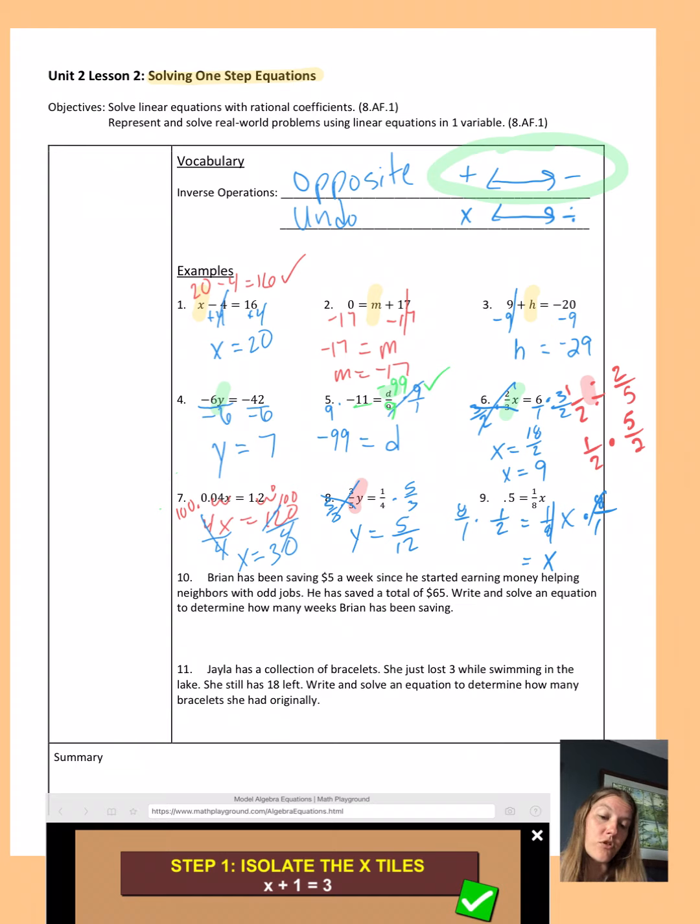So I can reduce top with bottom. What number goes into both? So 2 goes into 2 once and 2 goes into 8 four times. And then I'm going to multiply 4 times 1 is 4 over 1 times 1 is 1. And then I know that 4 divided by 1 is really just 4. So x equals 4.